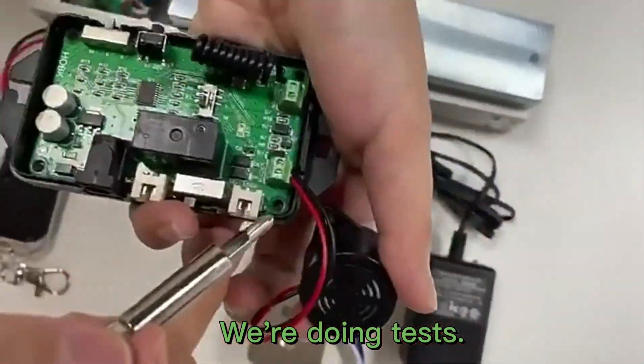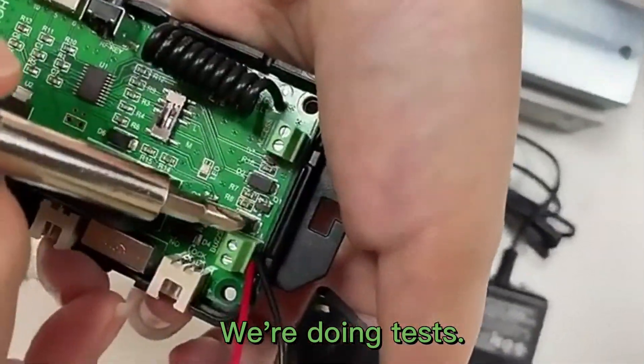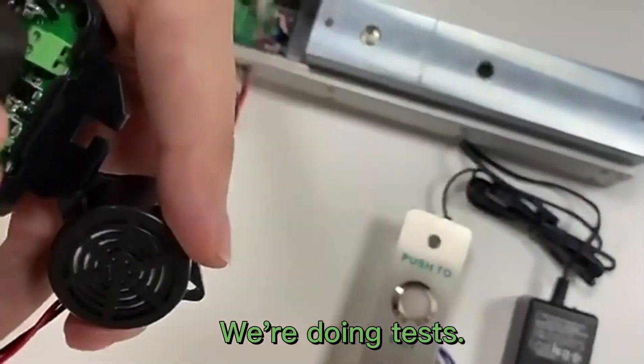As you do the wiring of the button, grab the red wire of the button and connect it to the positive terminal, and connect the black wire to the negative terminal. This terminal is used to connect the access keypad. Next, we will show you how to wire each component.